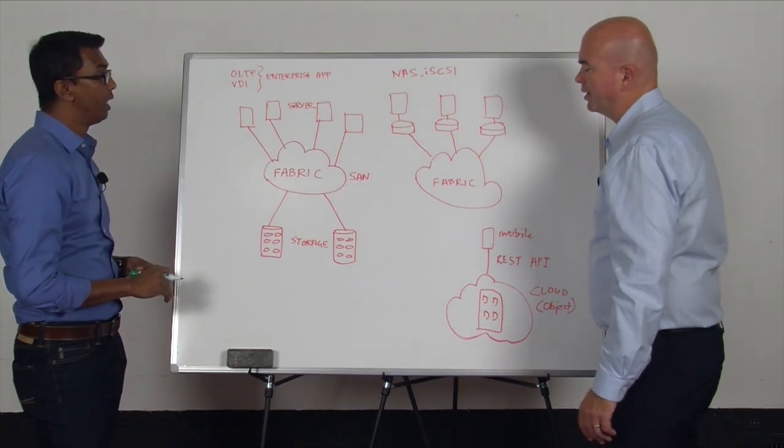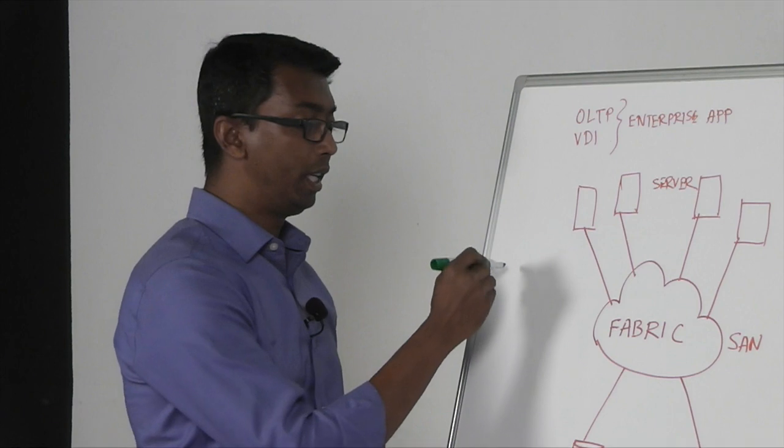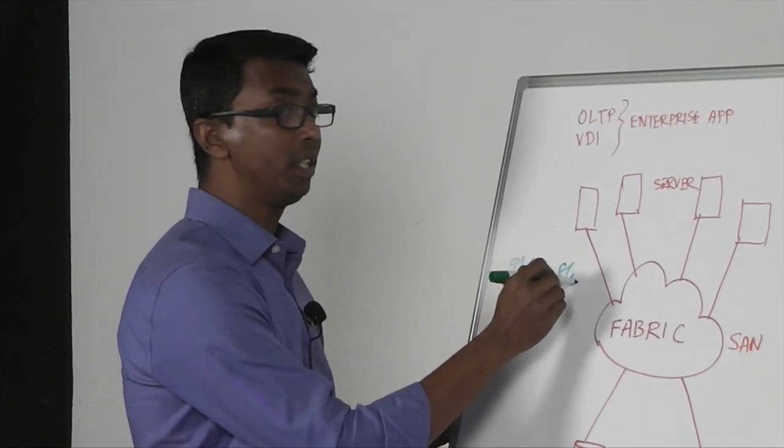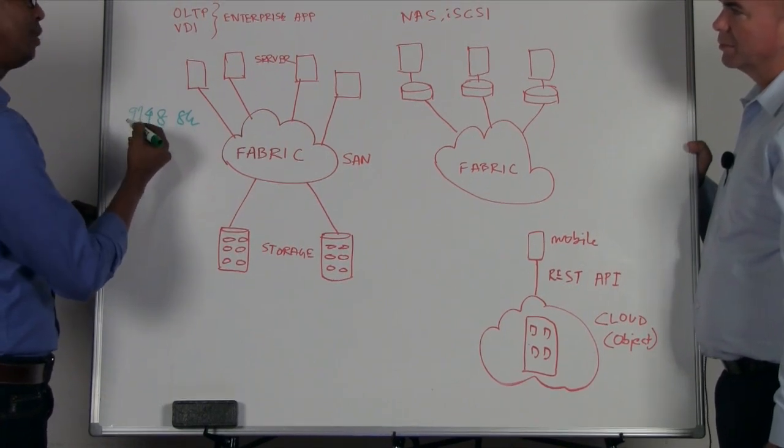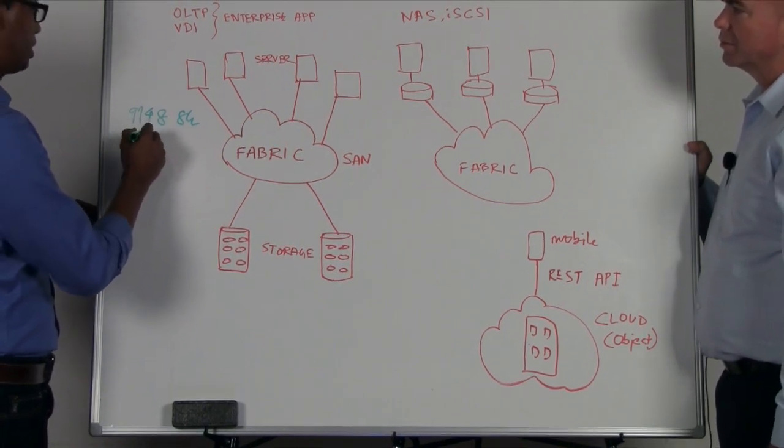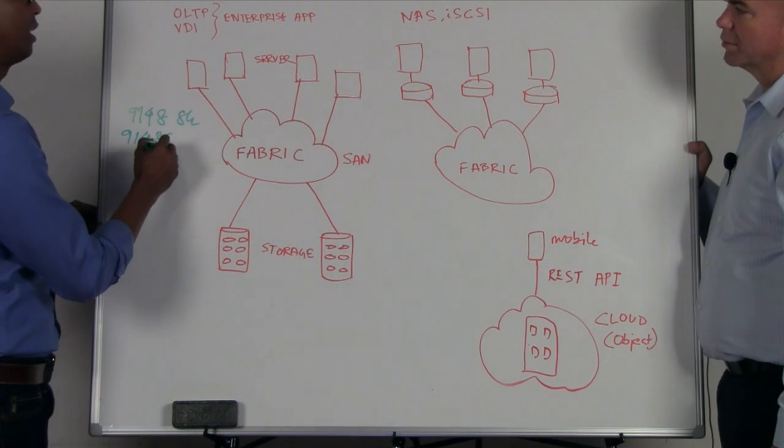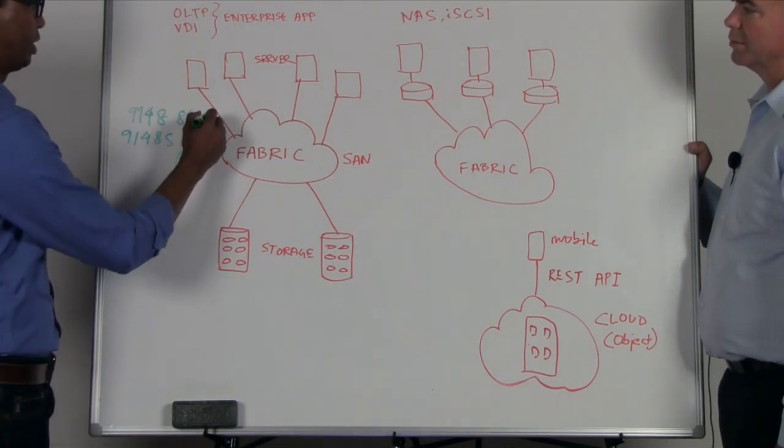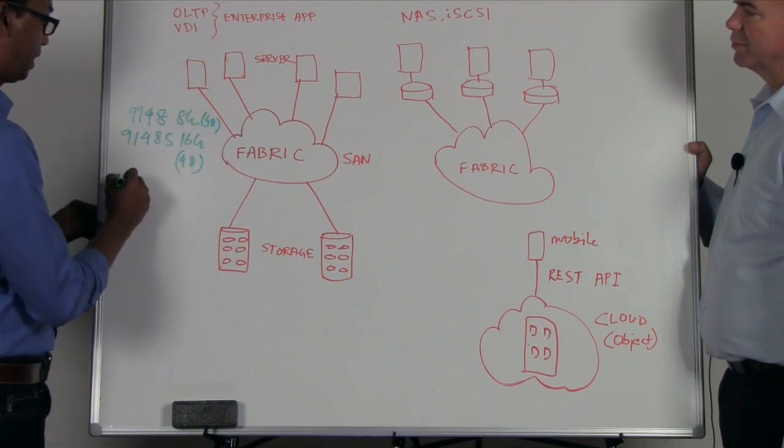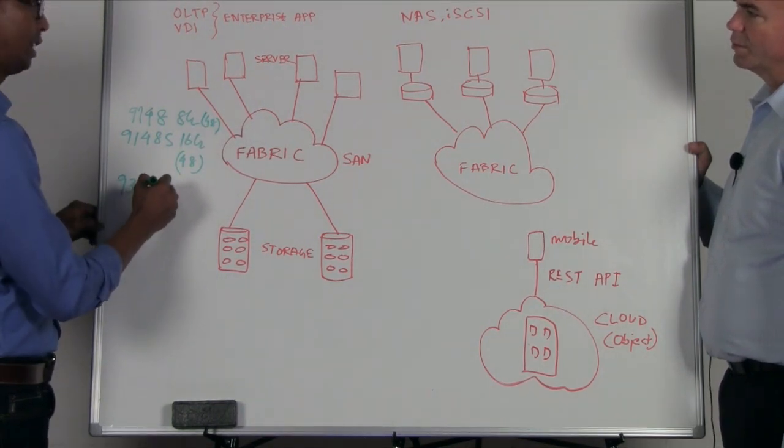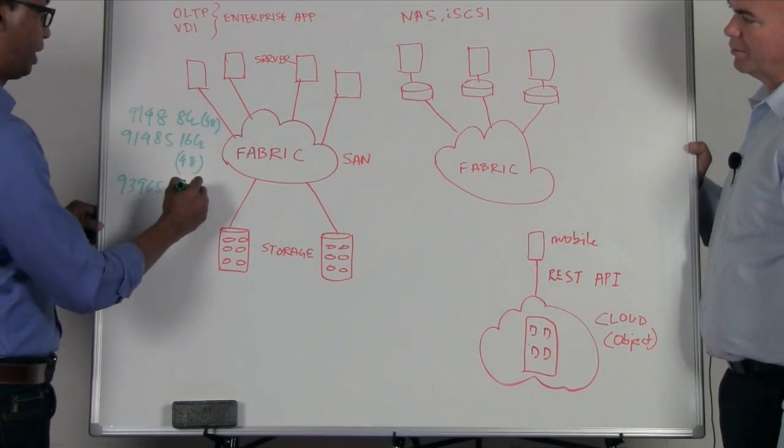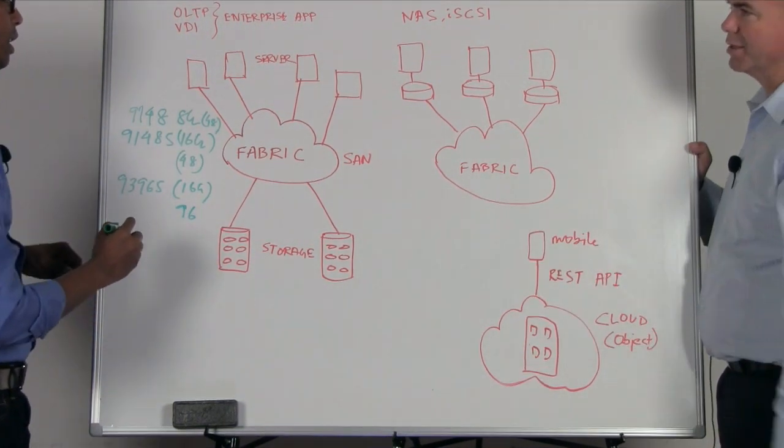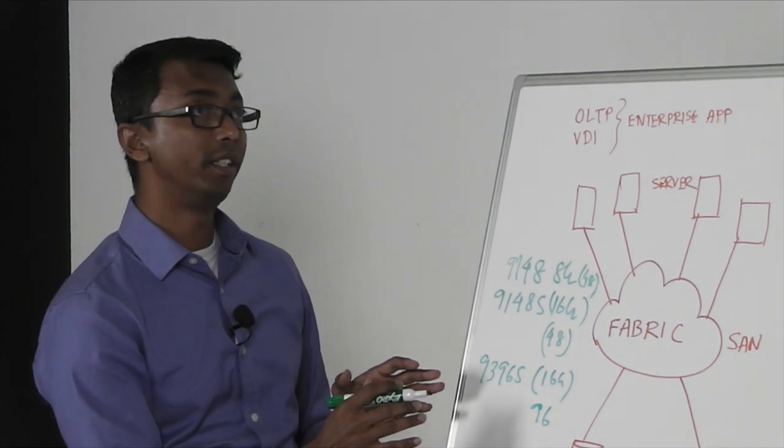Talk about a little bit of what you guys are doing there. In the past, we had 9148, and that is an 8 gig switch for us. In recent times, like two years back approximately, we launched 9148S. S stands for 16, so this is a 16 gig switch. But these are both 48 port switches. What we have done is recently we launched 9396S, which is again 16 gig switch, but now we also have a 96 port switch. That's part of the higher density we're talking about.